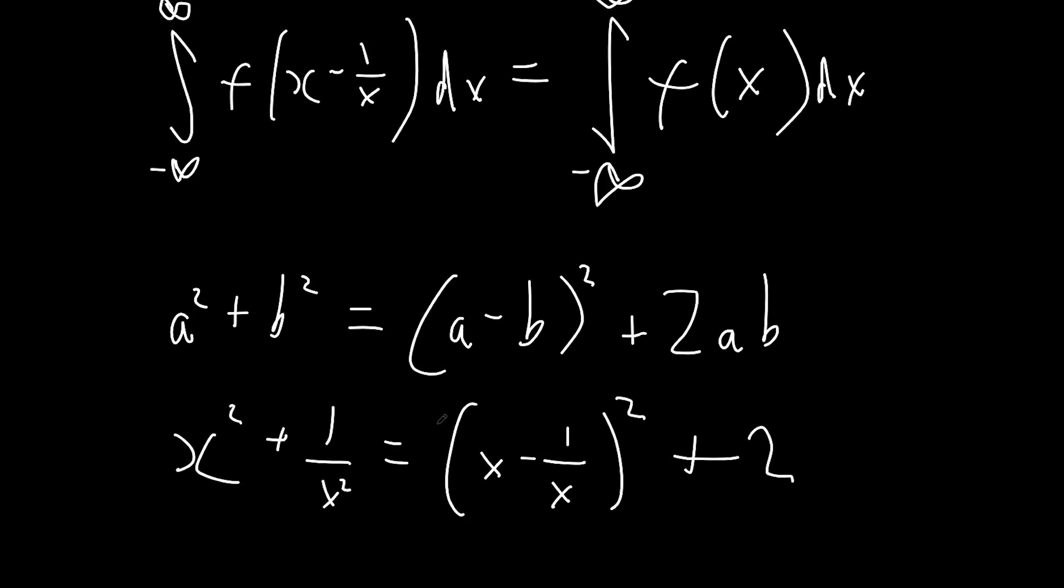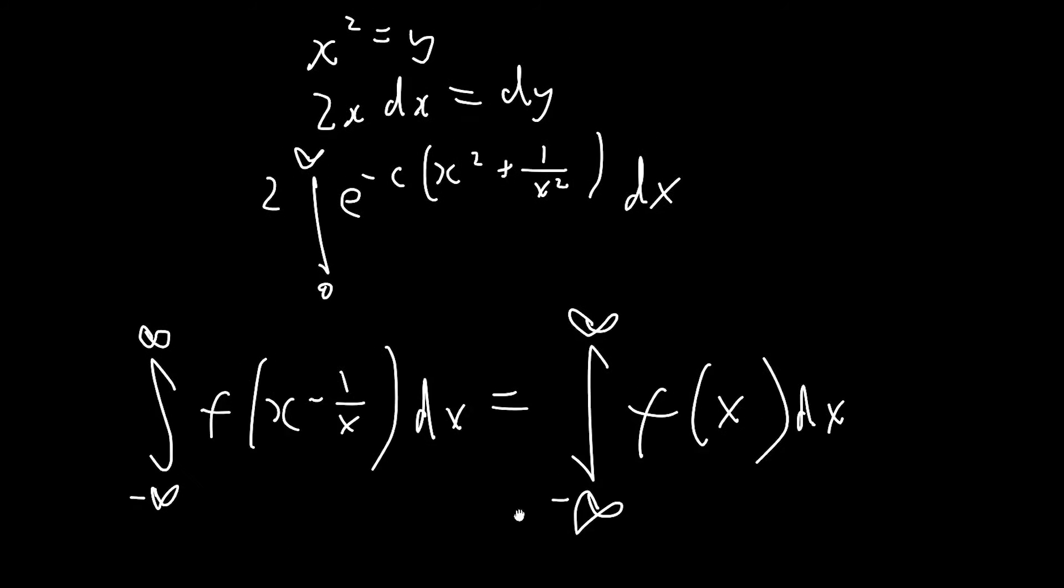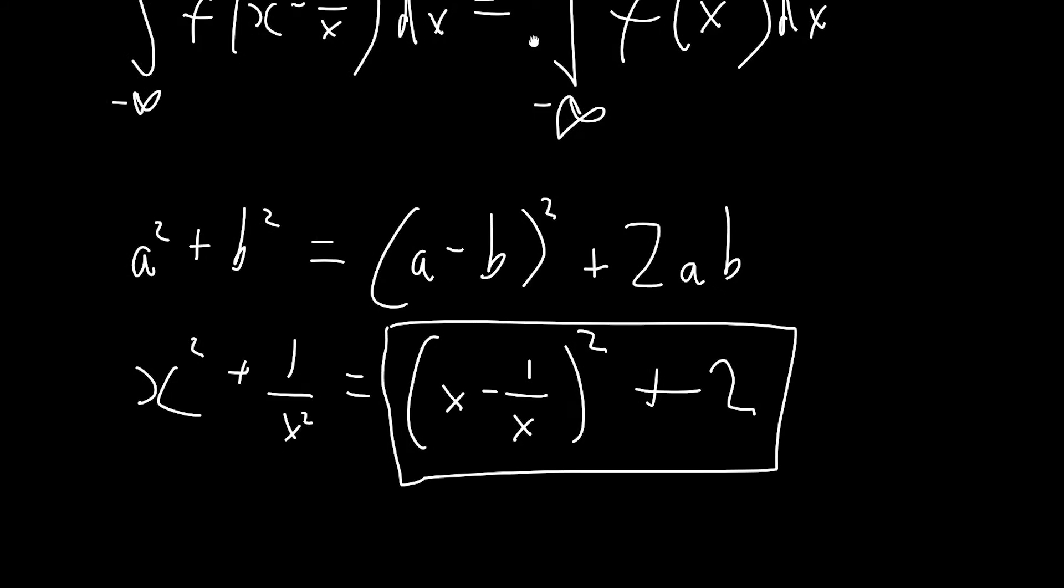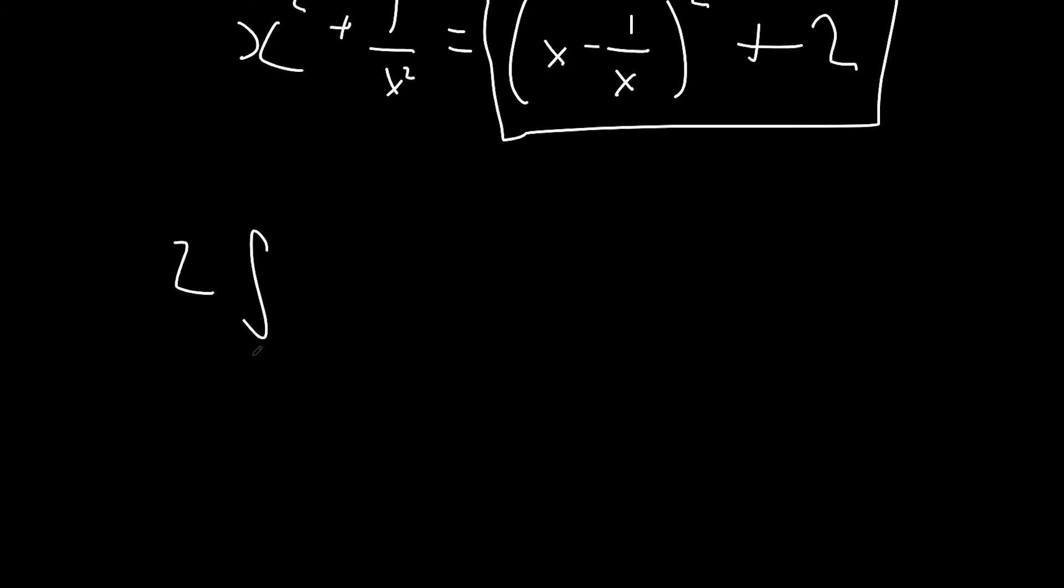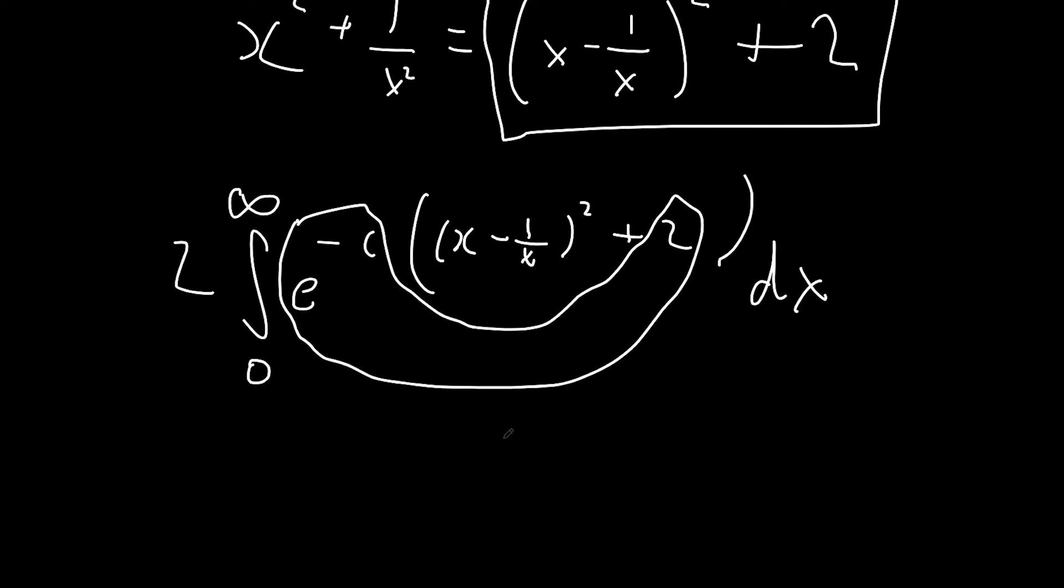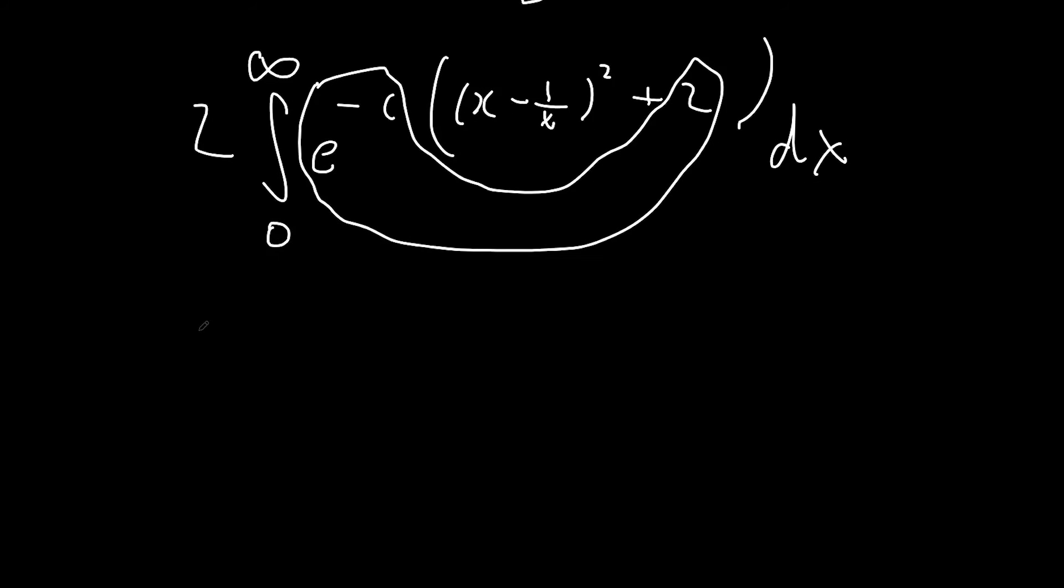So we can substitute this in and this will let us use Glasser's Master Theorem. We have 2 times the integral between 0 and infinity of e to the minus c times ((x minus 1 over x) squared plus 2) dx. Now e to the minus c times 2 is just a constant, so we can bring it out to the front. So we have 2e to the minus 2c times the integral of e to the minus c times (x minus 1 over x) squared dx.